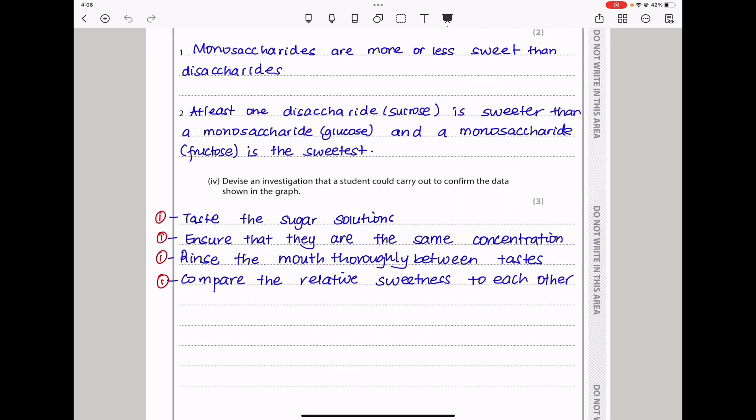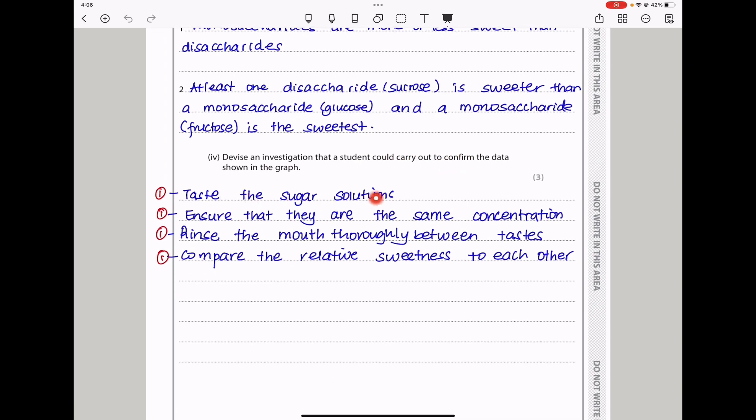Here they say devise an investigation that a student could carry out to confirm the data shown in the graph. The students can test the sugar solution. However, they should ensure that the concentration is the same. Before they test, they should rinse their mouth thoroughly, or at least between different tests, their mouth should be thoroughly washed. And then they could compare the relative sweetness with each other.